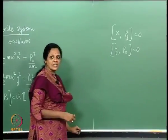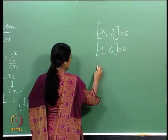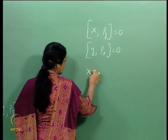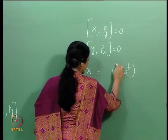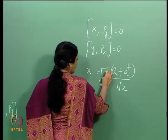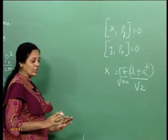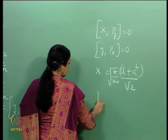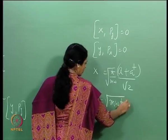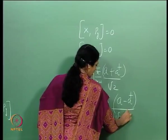I could write x in terms of the raising and lowering operators. Recall that x = (a + a†)/√2 · √(ℏ/mω), taking care of the right dimensions. And pₓ = √(mωℏ) · (a − a†)/(√2 · i).